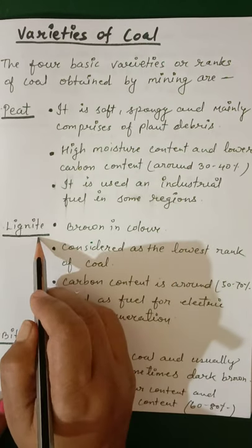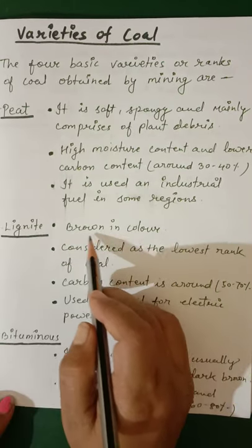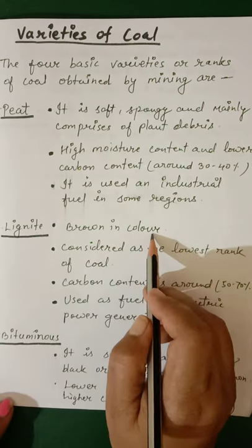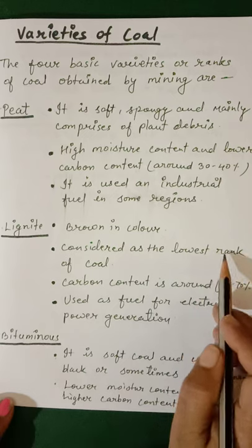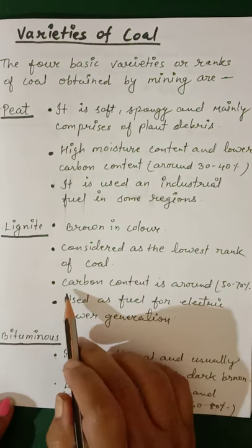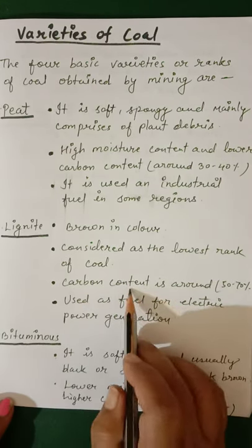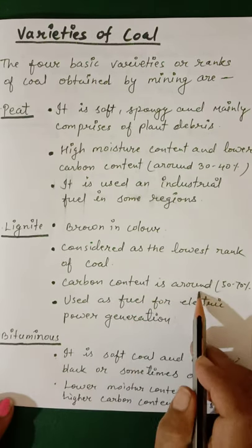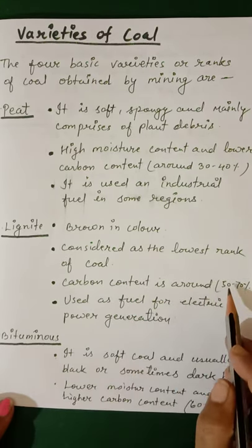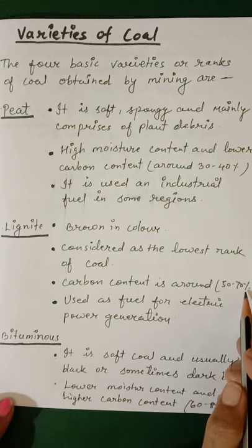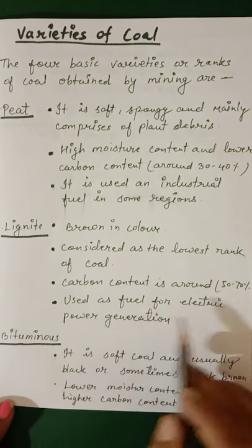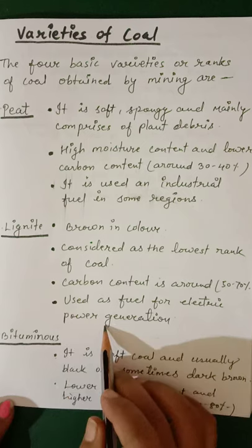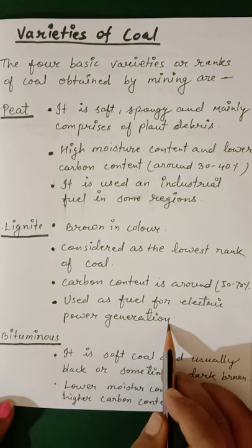Lignite: it is brown in color and is considered the lowest rank of coal. Carbon content is around 50 to 70%. It is used as a fuel for electric power generation.